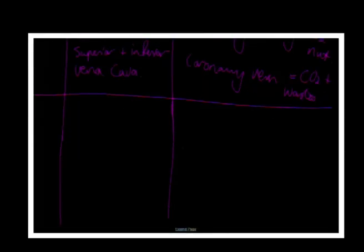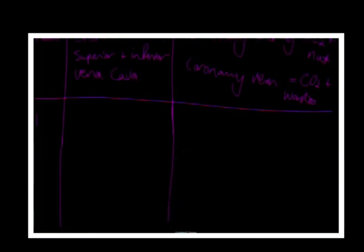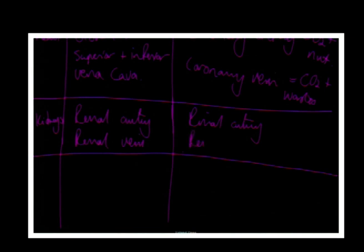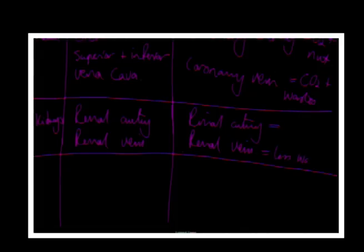The kidneys have the renal artery bringing oxygenated blood in and the renal vein taking blood out. The kidneys use some glucose and oxygen and return mainly carbon dioxide via the renal vein - less waste is passed back because the wastes have been filtered out. The renal artery carries oxygen and nutrients, and the renal vein carries less waste than other veins.